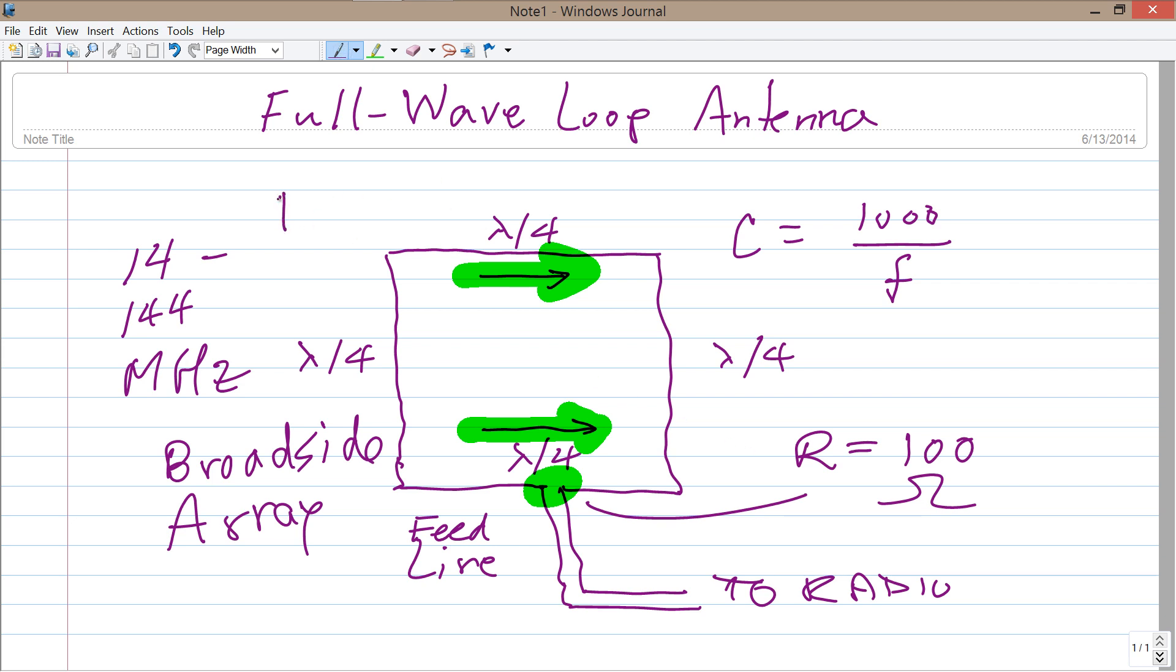That is to say, one or two dBd. But you actually get a little bit of gain along the axis of the loop compared to a plane half wave dipole. The maximum radiation and response in a loop like this is right along the axis.